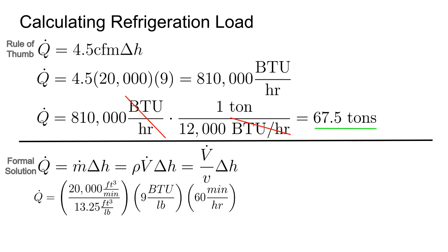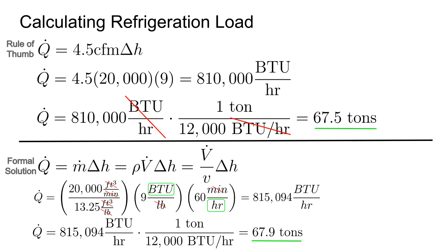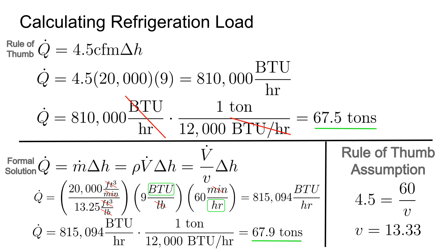We also need to convert from minutes to hours, so multiply by 60 — always show the units so they cancel out and you don't make a silly mistake. That gives 815,000 BTU per hour, which is quite close to the rule-of-thumb result. After converting to tons, that works out to 67.9 tons. The four-and-a-half in the rule of thumb includes 60 minutes per hour and an assumed specific volume of 13.33 cubic feet per pound, whereas we looked up 13.25 in the formal solution — that explains the slight difference, and the size of the error is a direct result of the difference in specific volume.